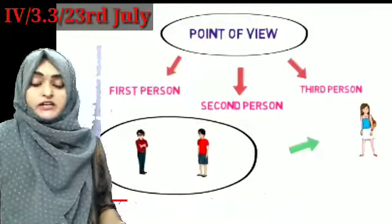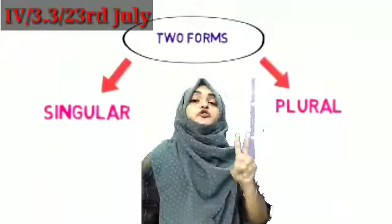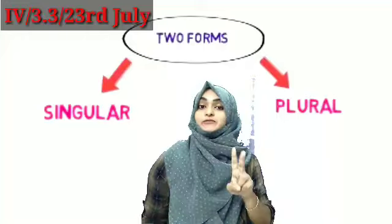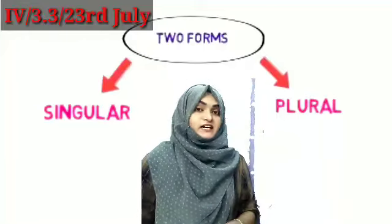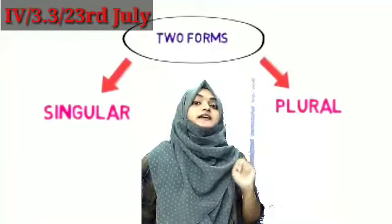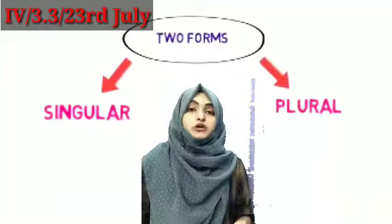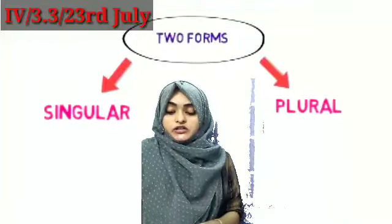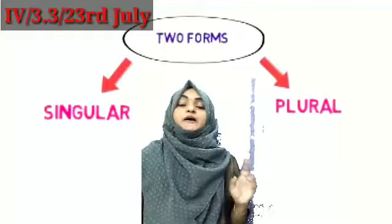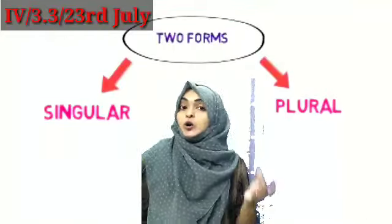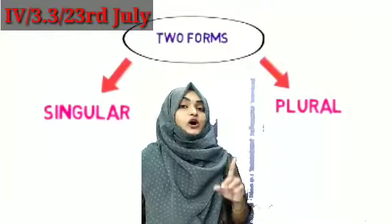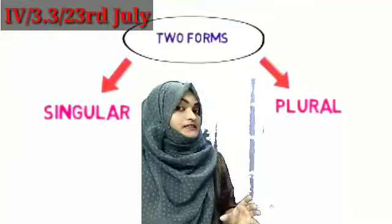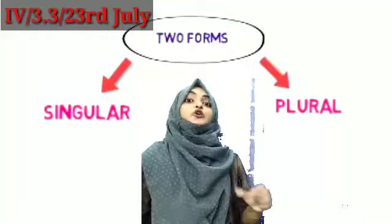Personal pronouns are divided into two forms that we discussed in our previous class: singular and plural. Talking about one person or thing is singular, and talking about more than one person or thing is called plural.